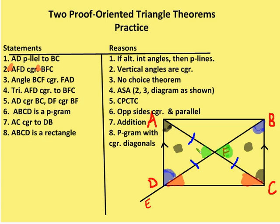ABCD is a parallelogram because I have opposite sides that are both congruent and parallel — that proves it's a parallelogram. Now I skipped a step: by CPCTC from proving those two triangles congruent, FB is congruent to DF. So by addition, AC is congruent to DB. Now ABCD is a rectangle because I have a parallelogram with congruent diagonals.